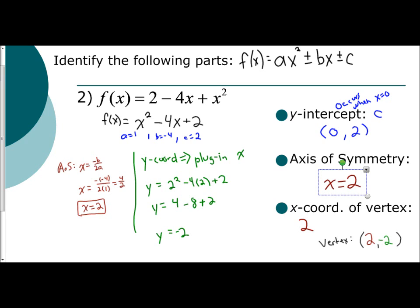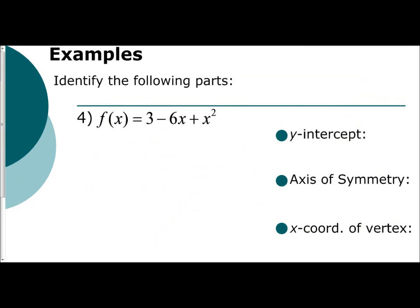Let's try one more example. We're going to skip ahead to example 4: identify the following parts — the y-intercept, the axis of symmetry, and the x-coordinate of the vertex. We'll also find the y-coordinate and the whole vertex. Again, we want to make sure our function is in standard form: f(x) = ax² + bx + c. We have f(x) = 3 - 6x + x², which is not in standard form, so we rewrite it.